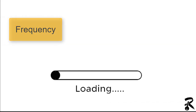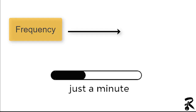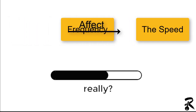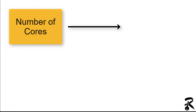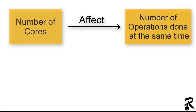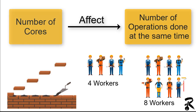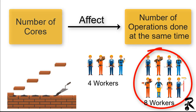The frequency affects how many operations a single core can do in a second — that means how fast it is. The number of cores affects the number of operations you can do at the same time. To clarify with an example: if I have to build a wall in a very short period of time, should I put 4 workers or 8 workers? Of course I would select 8 workers to get the wall finished quickly — and that is the same way a core in a CPU works.